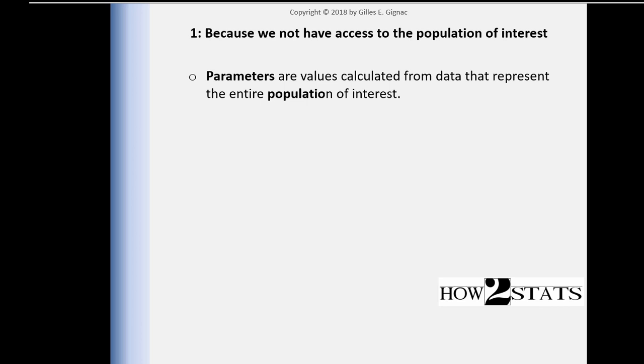Now I'll cover the distinction between parameters and statistics — this is really just to help you get the labels right. Parameters are values calculated from data that represent the entire population of interest. So if I wanted to know the average performance on the final exam of students who take a unit with me, I can actually calculate that from the population because I have access to all the data.